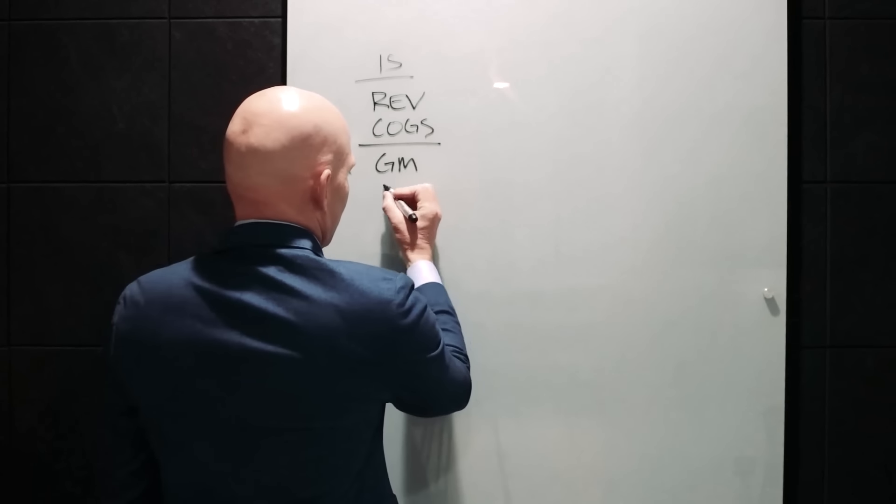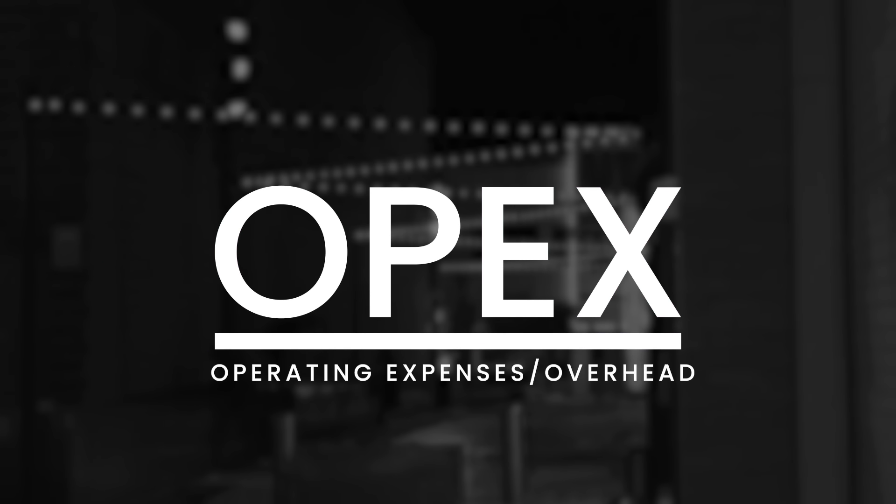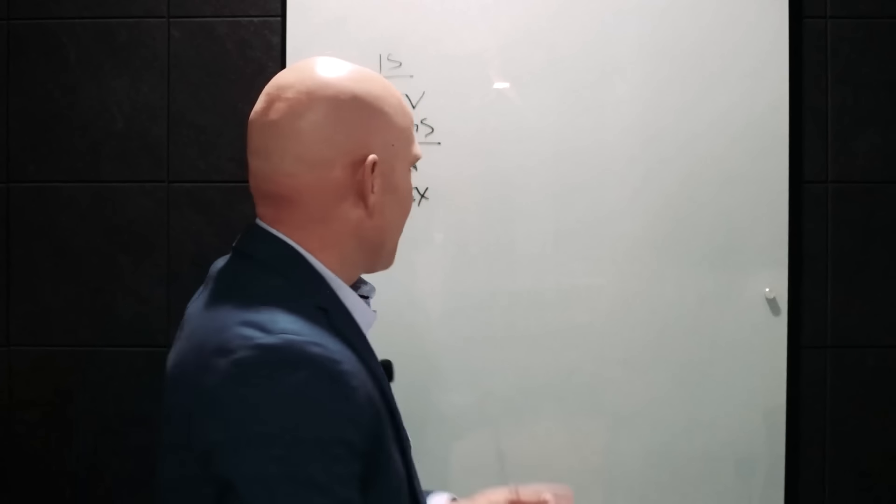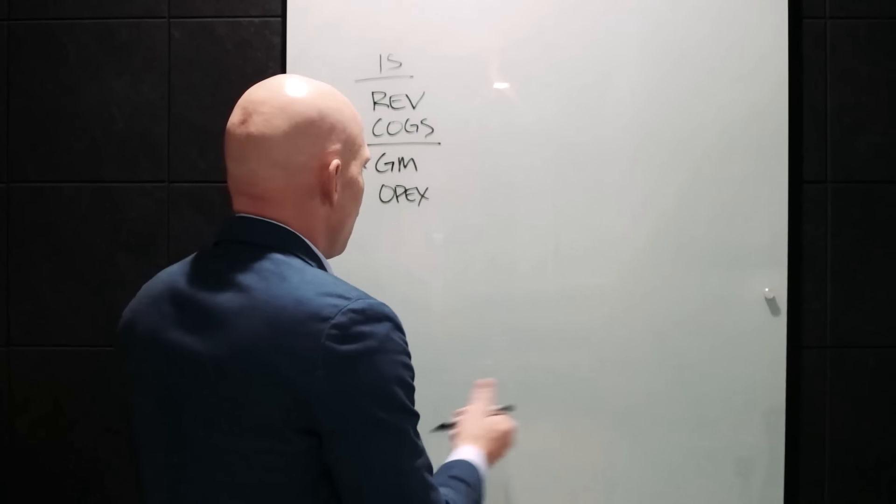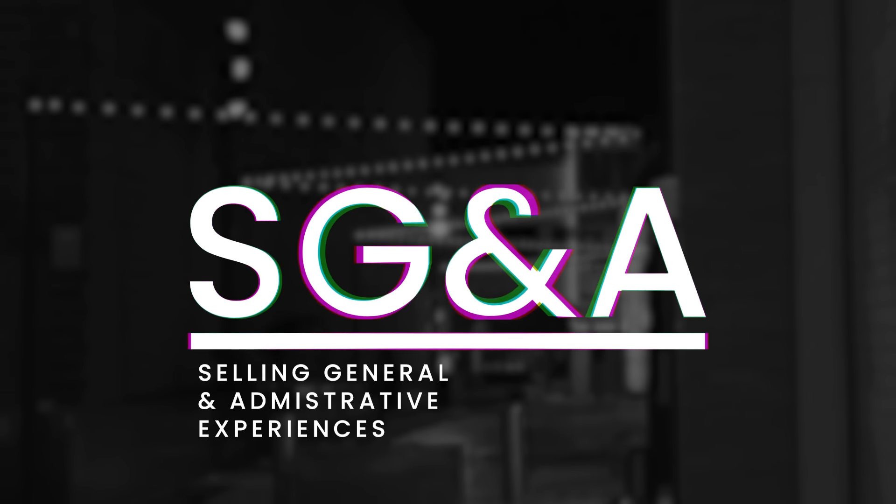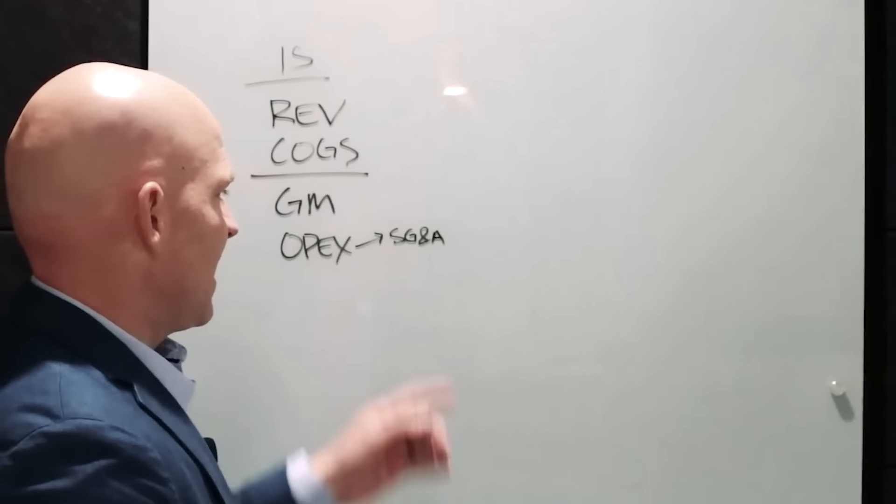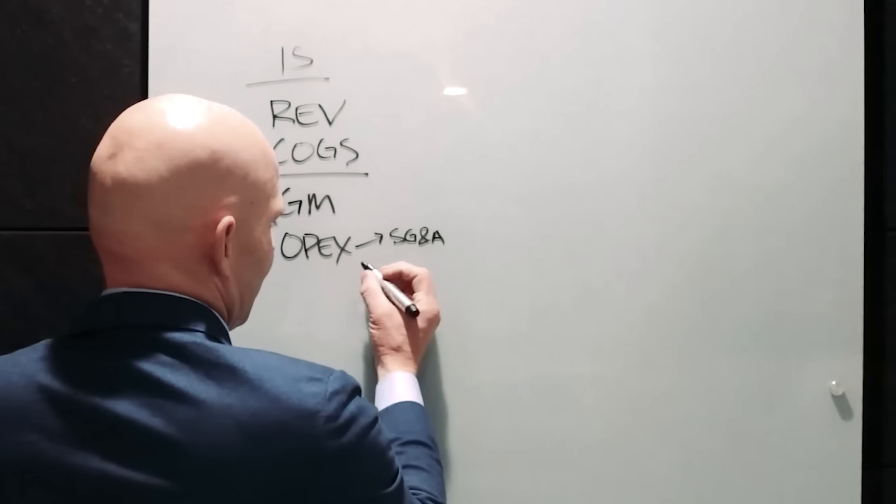Underneath gross margin, we have OPEX, which is just a short way and a cool way of saying operating expenses, also known as overhead. Now there are subcategories with OPEX, such as selling, general, and administrative expenses, which may include items such as selling and marketing expenses, general and administrative payroll, professional fees, insurance, rent, utilities, and all other costs associated with running the business would land here in SG&A, selling general and administrative.